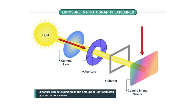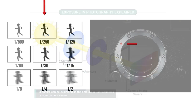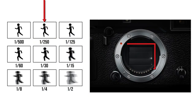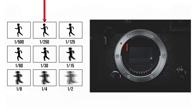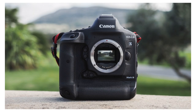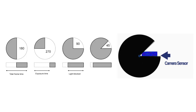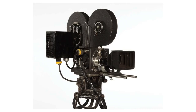A shutter is a mechanical device inside of a camera that exposes film or an electronic sensor to light passing through the lens for a controlled period of time. Shutter speed primarily refers to a focal plane shutter found in professional grade photo cameras, while shutter angle refers to a rotary shutter found in motion picture cameras.